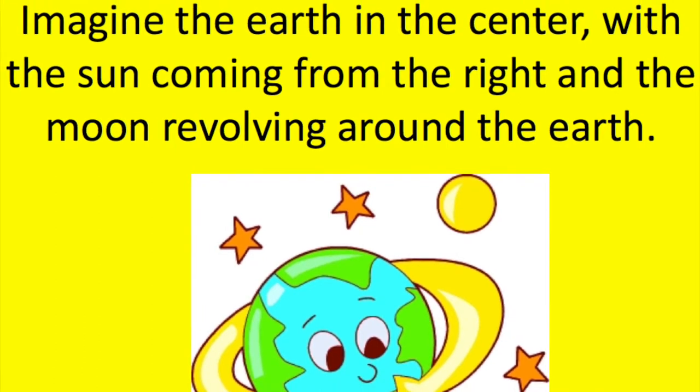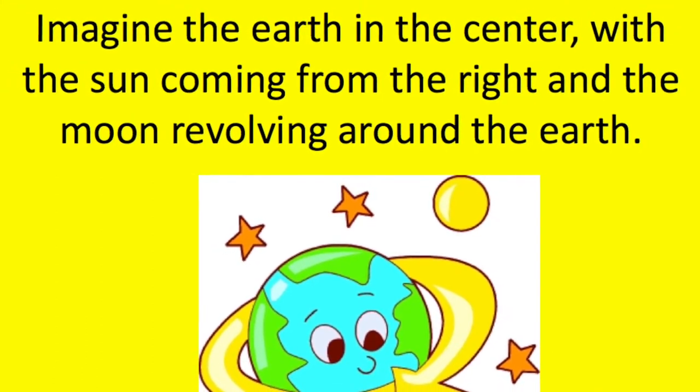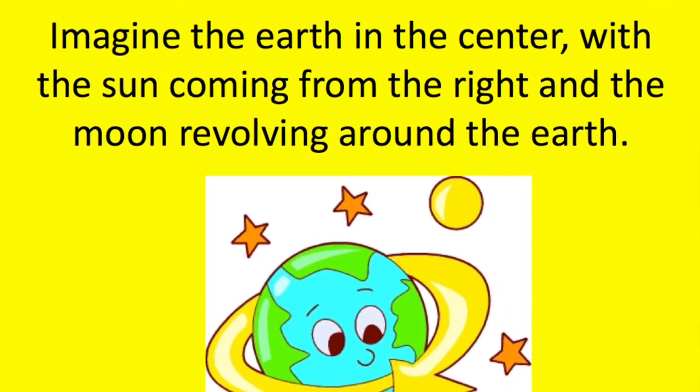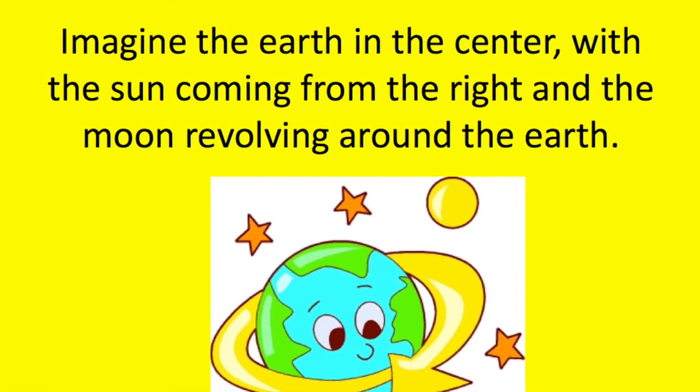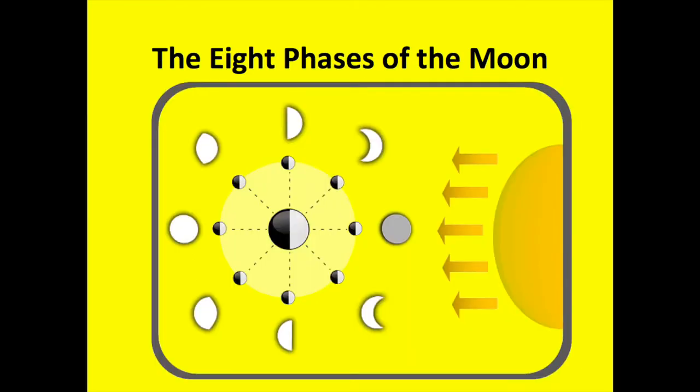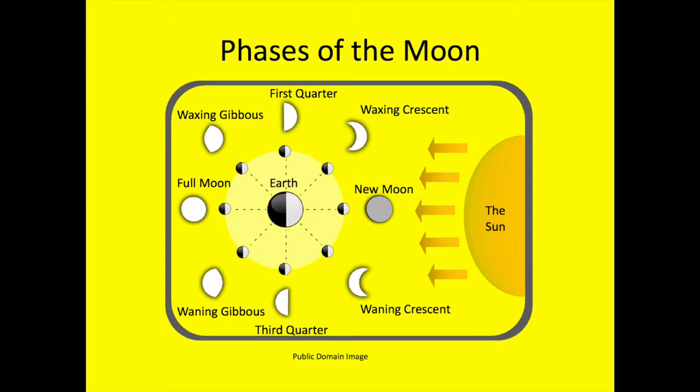Imagine the earth in the center with the sun coming from the right and the moon revolving around the earth. The lunar month is the approximately 29.5 days that it takes to go through the 8 phases from one new moon to the next.